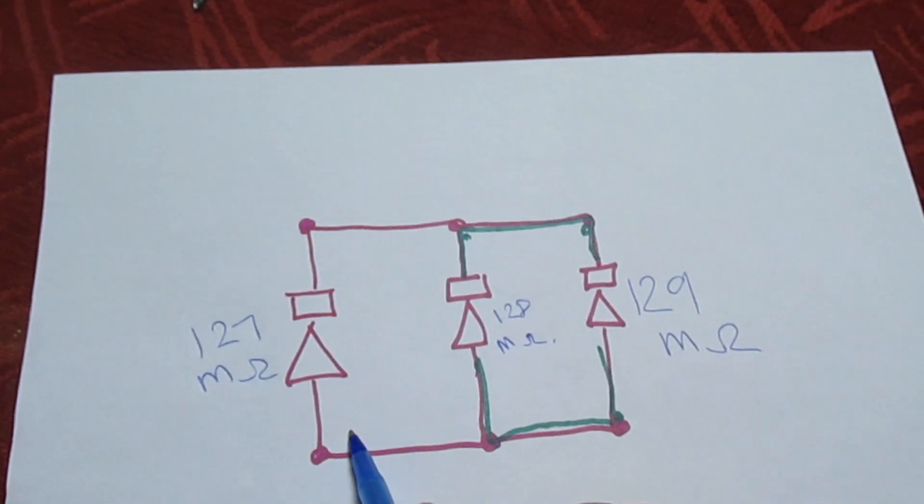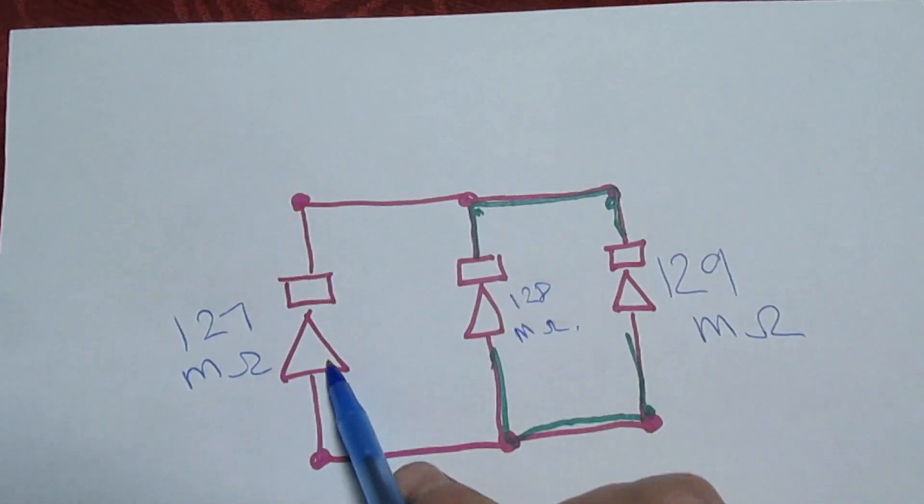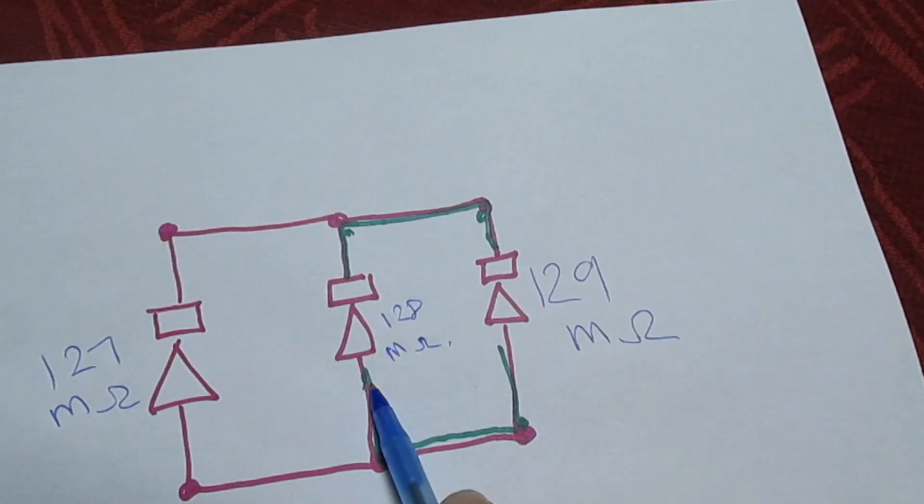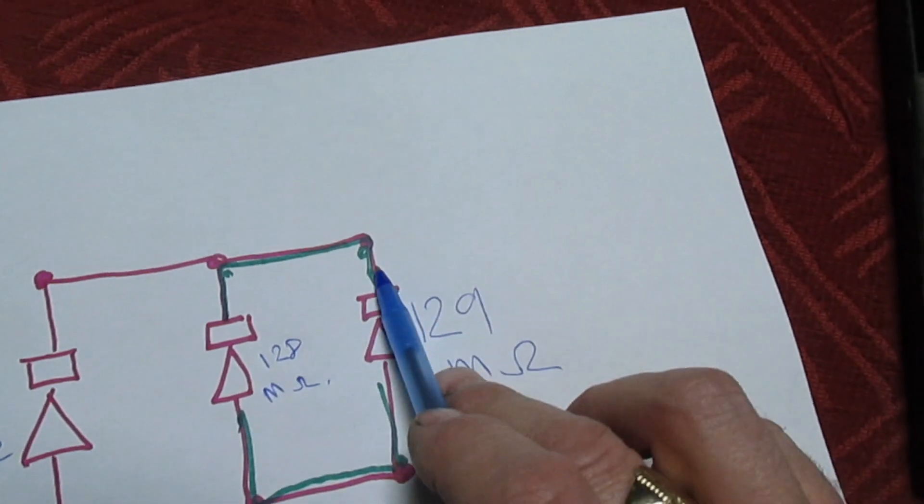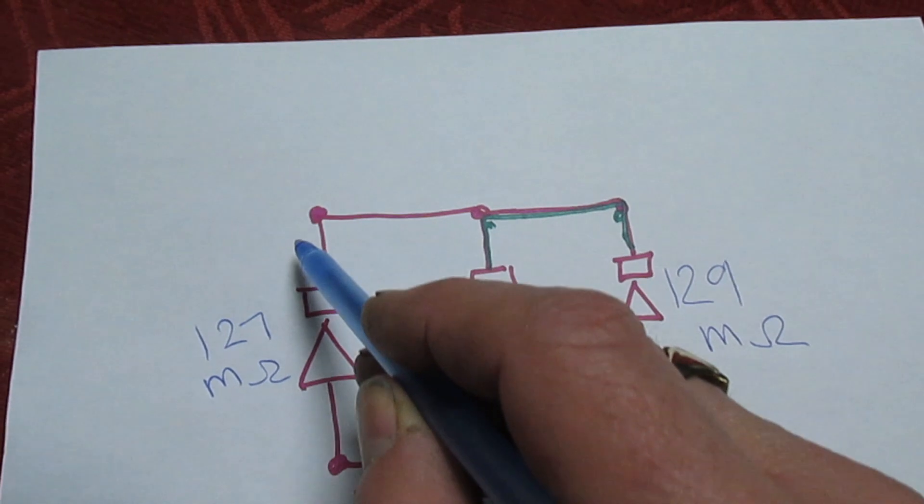Right, so if we examine this now, the three diodes in the same order they appear in the set, we've got 127 milli-ohms across that, 128 milli-ohms across that, and 129 milli-ohms across that. Now that's telling me that this diode here is the one that's faulty.